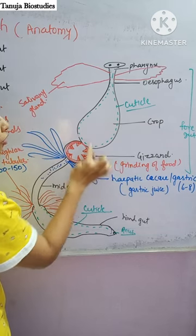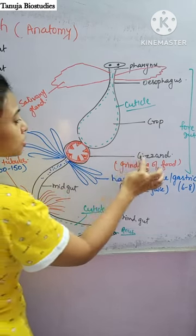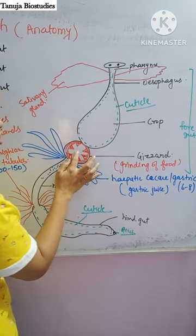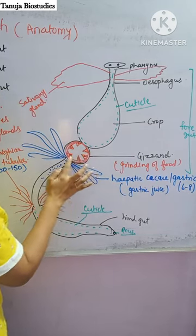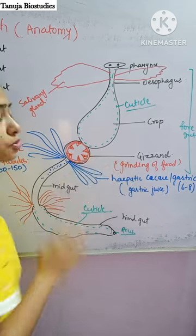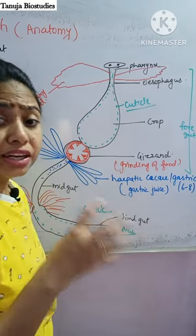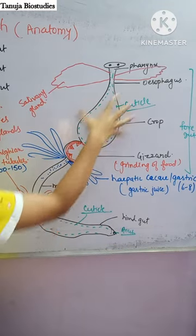After the crop, there is a round structure called the gizzard, which has six chitinous teeth. These teeth are responsible for the grinding of food.